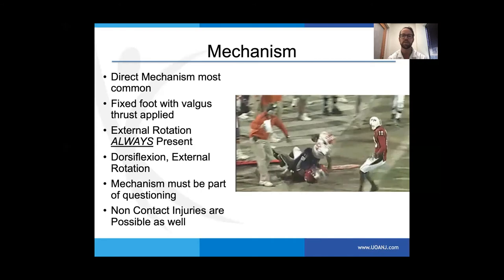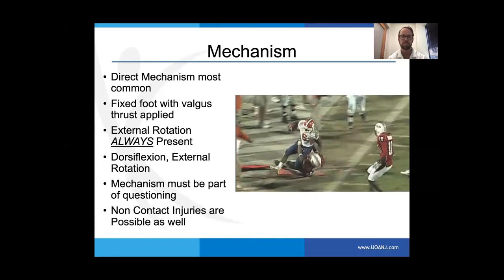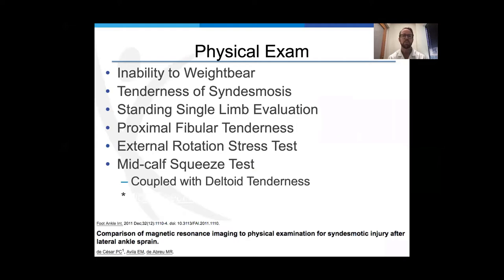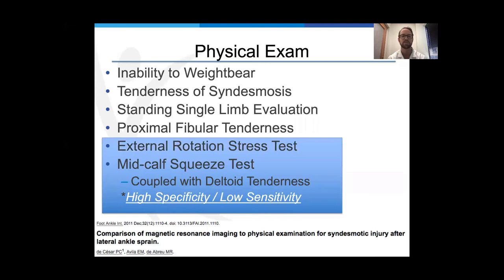The physical exam: this is not a typical ankle sprain. Patients have inability to bear weight, tenderness and potentially swelling of the syndesmosis, and inability to perform a single-limb evaluation. The most important test is the external rotation stress test or cotton's test — this has the highest specificity for this injury, but unfortunately has low sensitivity. Therefore, we should have a very low threshold for ordering ancillary MRI studies when clinical findings point toward the syndesmosis.